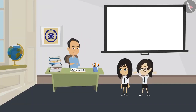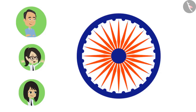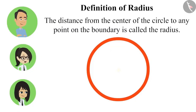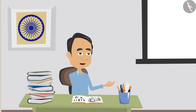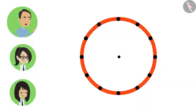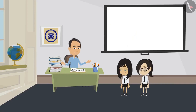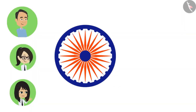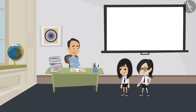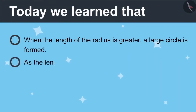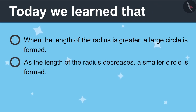The teacher corrects this: the radius is the distance from the center to any point on the boundary, and there can be many points on a circle. Lines can be drawn from the center to all those points, and each of those lines is called a radius. Therefore, there can be several radii in one circle — just like in the Ashok Chakra and in the spokes of a bicycle wheel. Today we learned: when the radius is greater, a larger circle is formed; as the radius decreases, a smaller circle is formed; and there are many radii in one circle.